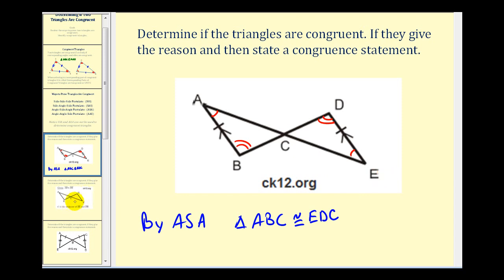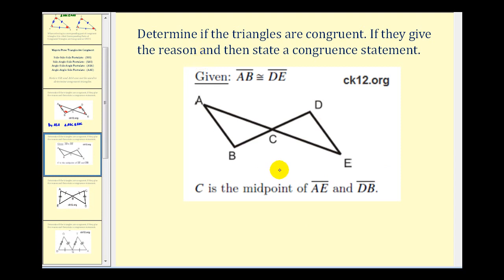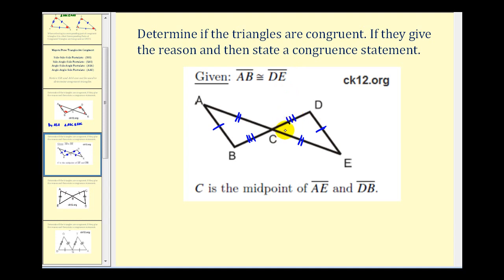Same question, different information. Here we're given that AB is congruent to DE. We're also given that C is the midpoint of segment AE and segment DB. Since C is the midpoint of AE, AC is congruent to CE. And since C is the midpoint of segment BD, BC would be congruent to CD. So by side-side-side, these two triangles are congruent.